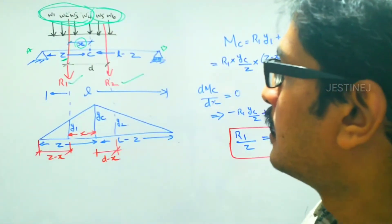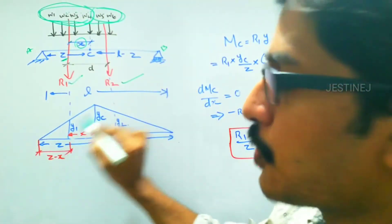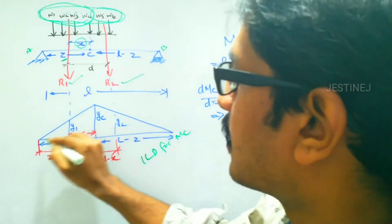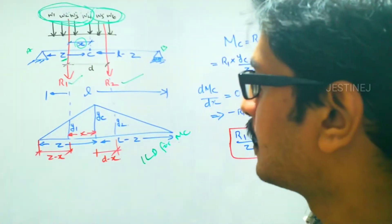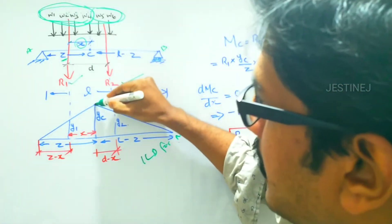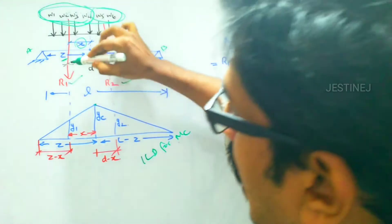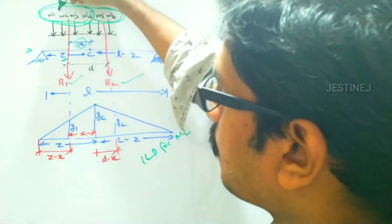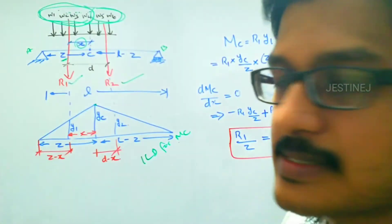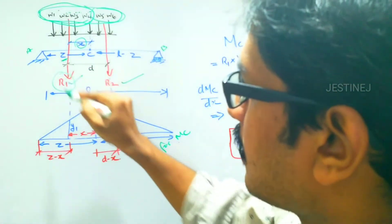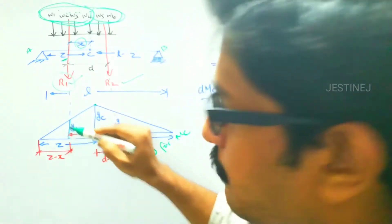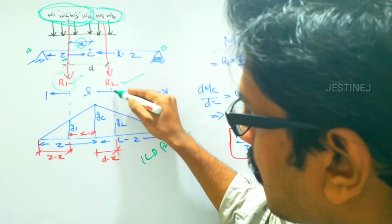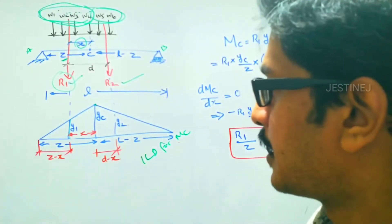If we draw the influence line diagram for MC, the maximum bending moment ordinate will be yc. If we consider W1, W2, W3, and W4 as a single load R1, it will give an ordinate y1; correspondingly R2 will give ordinate y2.